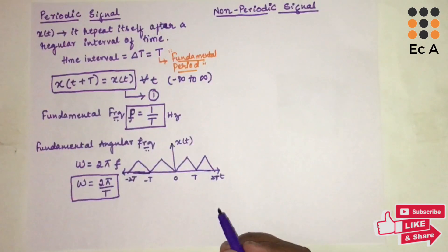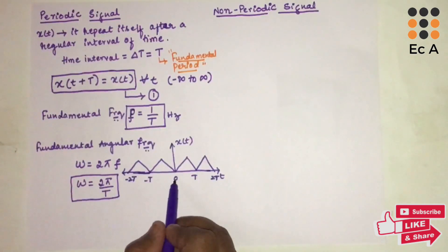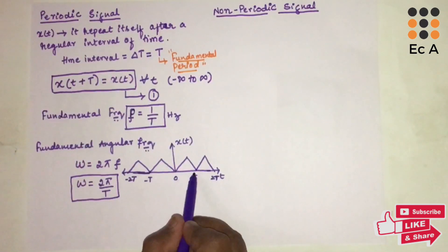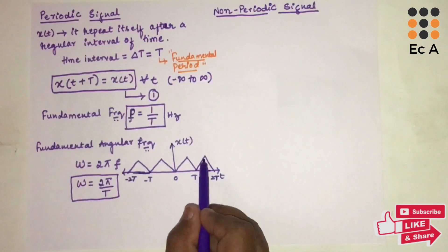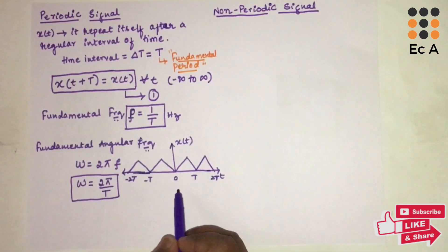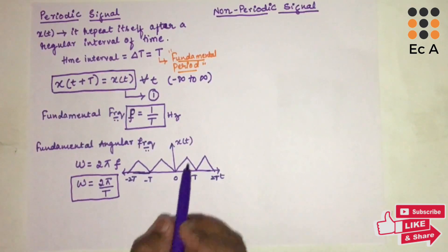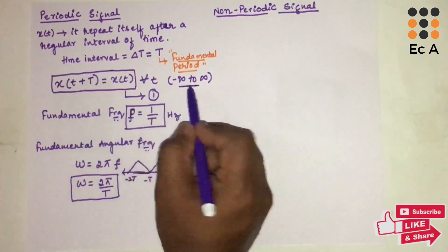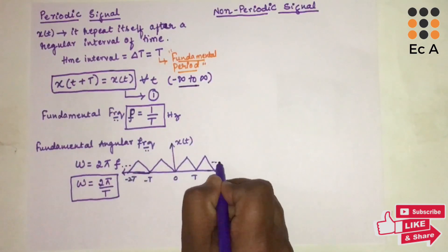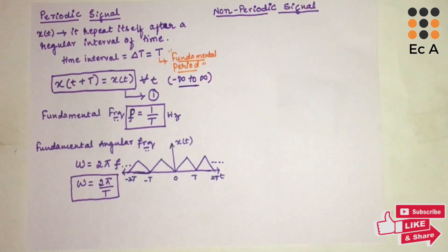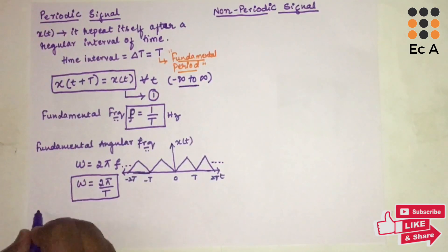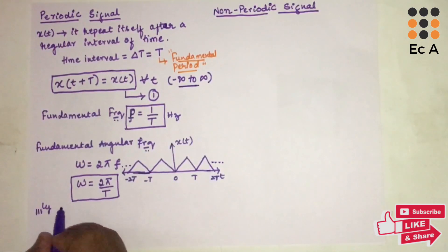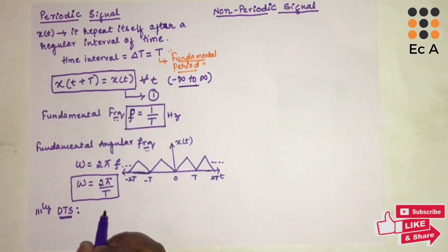Here is an example of a continuous time periodic signal. You can see this signal has a fundamental period of T — this is one cycle of the signal. After this fundamental time period, the signal repeats itself, which is why we call it a periodic signal. The condition is that it must be periodic for all values of t from minus infinity to infinity.